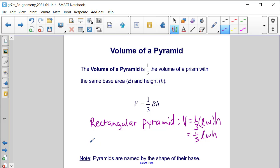If it was a triangular pyramid, its volume would still be one-third times the area of the base, which would be one-half the base of the triangle times the height of the triangle, and then you would multiply that by the height of the pyramid.